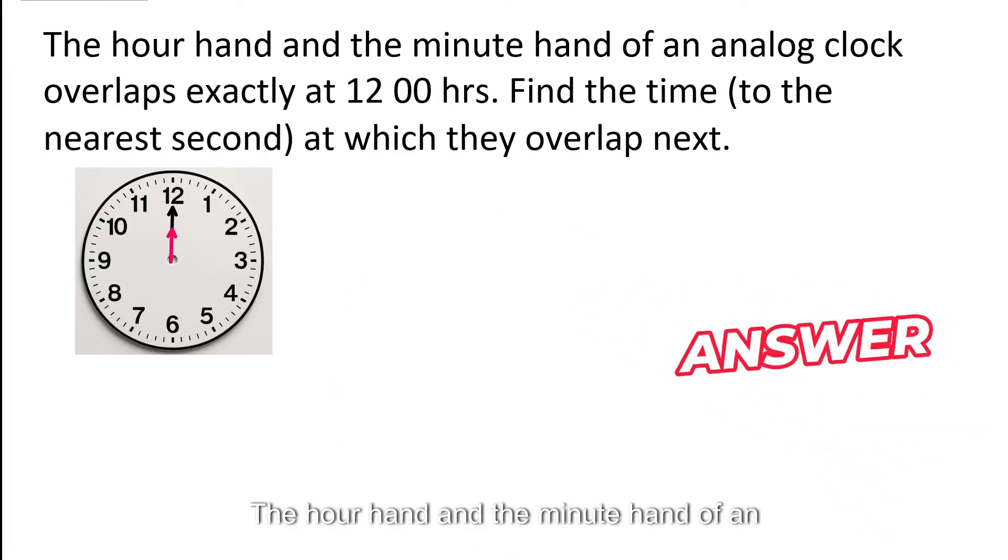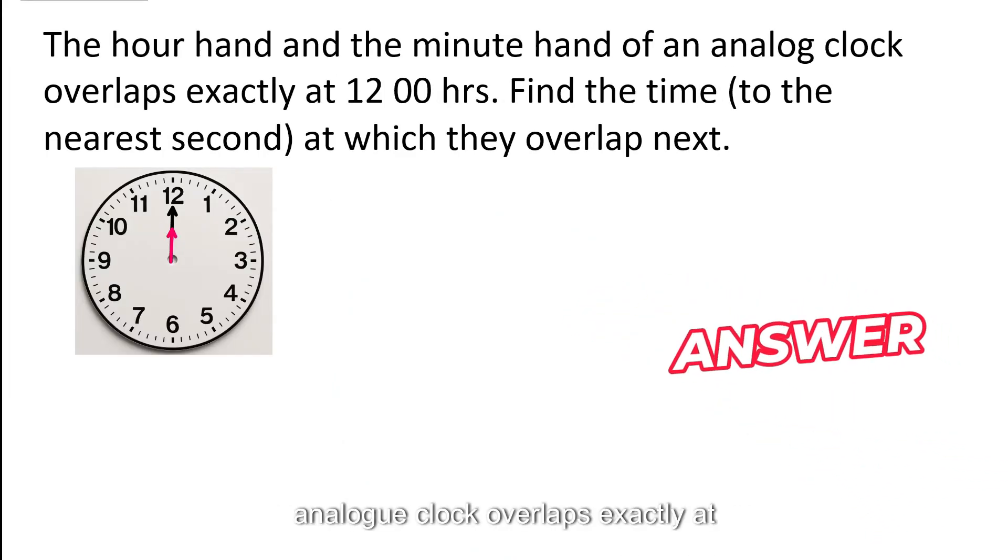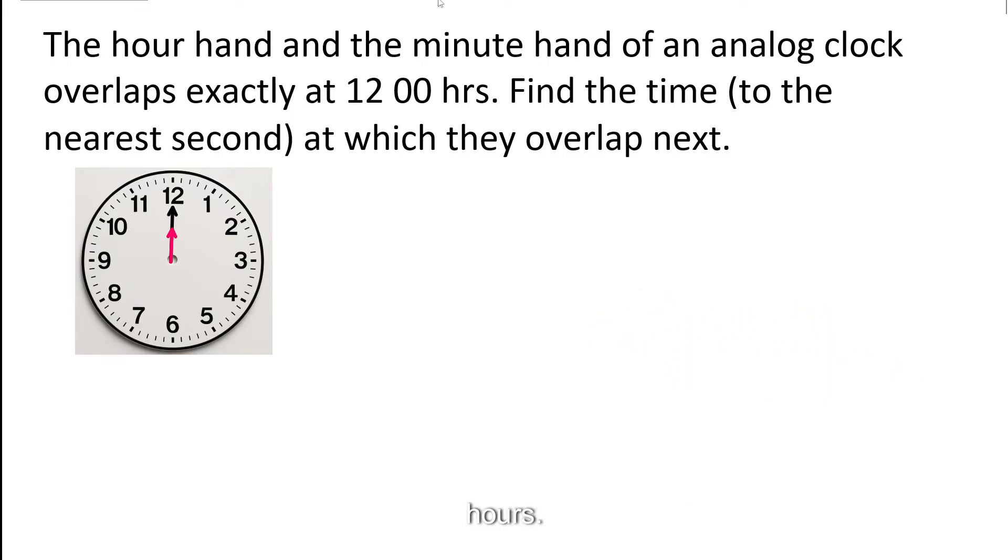The hour hand and the minute hand of an analog clock overlaps exactly at 12 hours. So we can see at this point here, both hands are on top of each other. So they are overlapped. Find the time to the nearest second at which they overlap next.